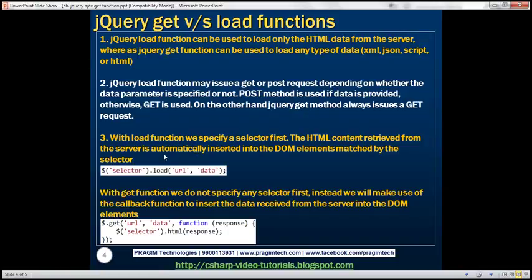With the LOAD function, we specify a selector first. The HTML content retrieved from the server is automatically inserted into the DOM element that matches the specified selector. With the GET function, we do not specify any selector first. Instead, we make use of the callback function to insert the data received from the server into the DOM element. And to call the GET function, we use the jQuery object.